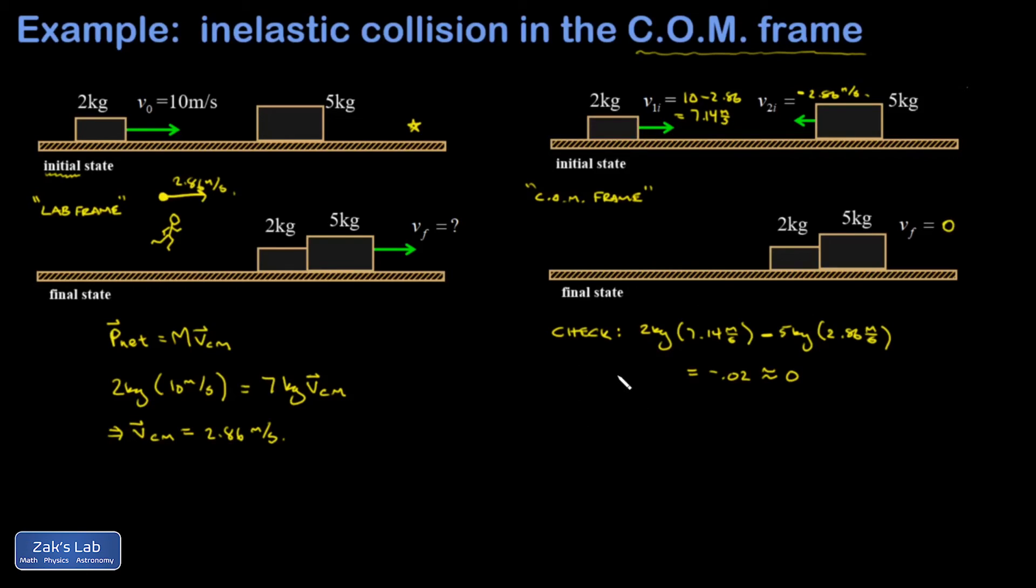Now I convert back to the lab frame. We got into the center of mass frame by subtracting 2.86 meters per second. We're going to get back into the lab frame by adding 2.86 meters per second. So my V final is going to be the zero that I found in the center of mass frame plus 2.86 meters per second. In other words, these blocks are sliding along at 2.86 meters per second in the final state. And this agrees with the result we got when we analyzed the collision entirely in the stationary frame.